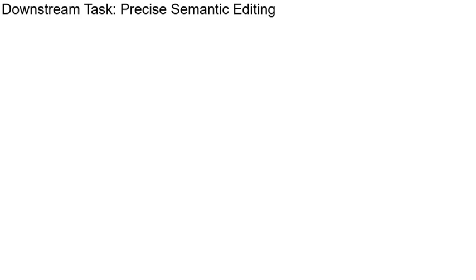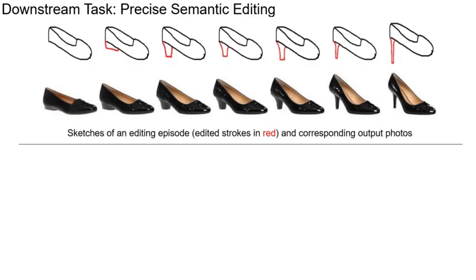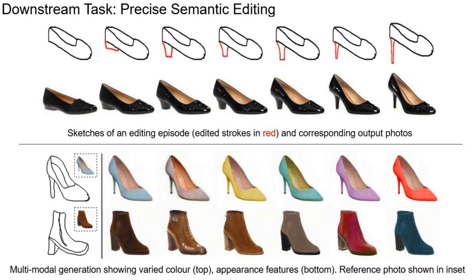Our method enables realistic semantic editing as a downstream task. The top figure depicts a sketch editing episode where the user gradually changes the heel length via sketch to observe consistent local changes in the output photo domain. The bottom figure shows how we can generate multiple color and appearance variation images from a single sketch using multimodal generation.